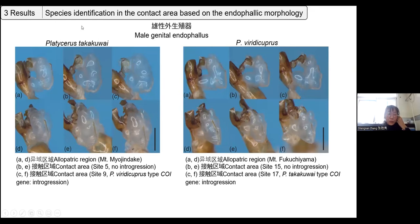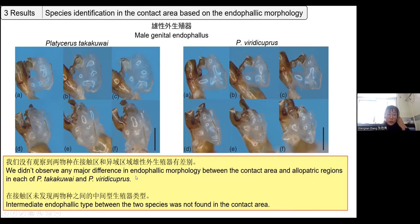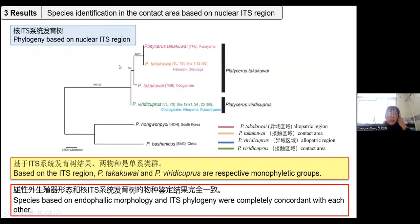Next, I want to show the results for species identification in the contact area. Based on the endophallic morphology, pictures A and B are from the allopatric area, while D, E, and F are the endophallic morphology from the contact area. We found no significant differences between the allopatric and contact area morphology for either species. There is no intermediate endophallic type between the two species, even in the contact area.